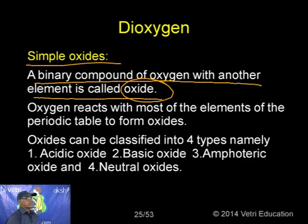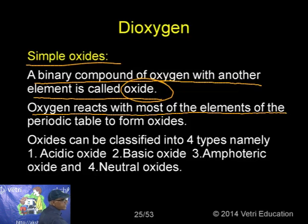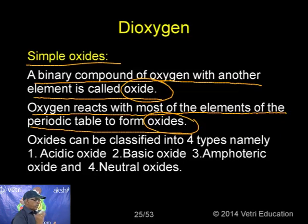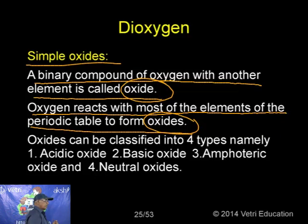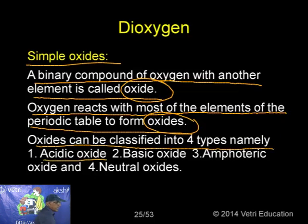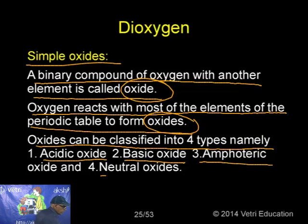Similarly, CO₂ gives carbonic acid. Chromium trioxide CrO₃, even though it is a metallic oxide, dissolves in water to produce chromic acid H₂CrO₄ — so it is acidic. This shows that some metallic oxides in higher oxidation states also show acidic character.